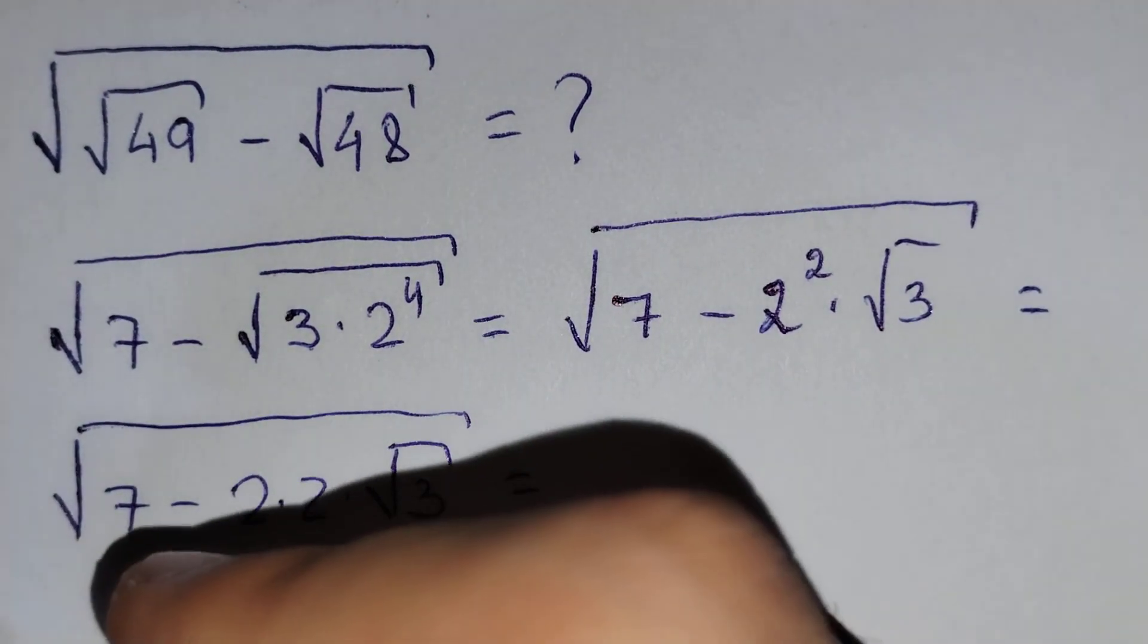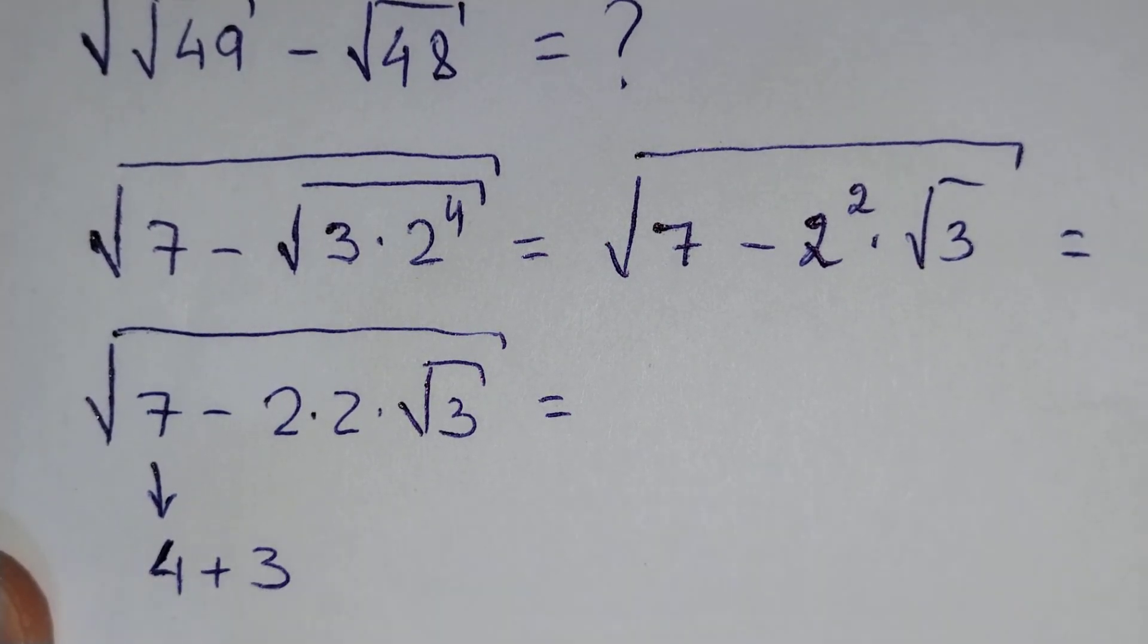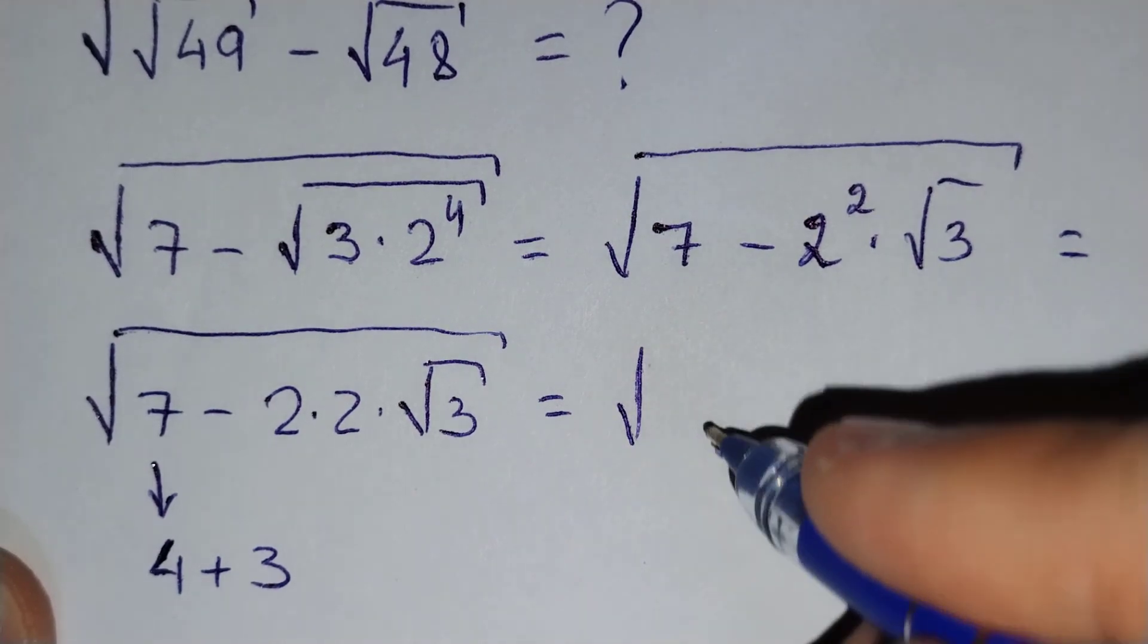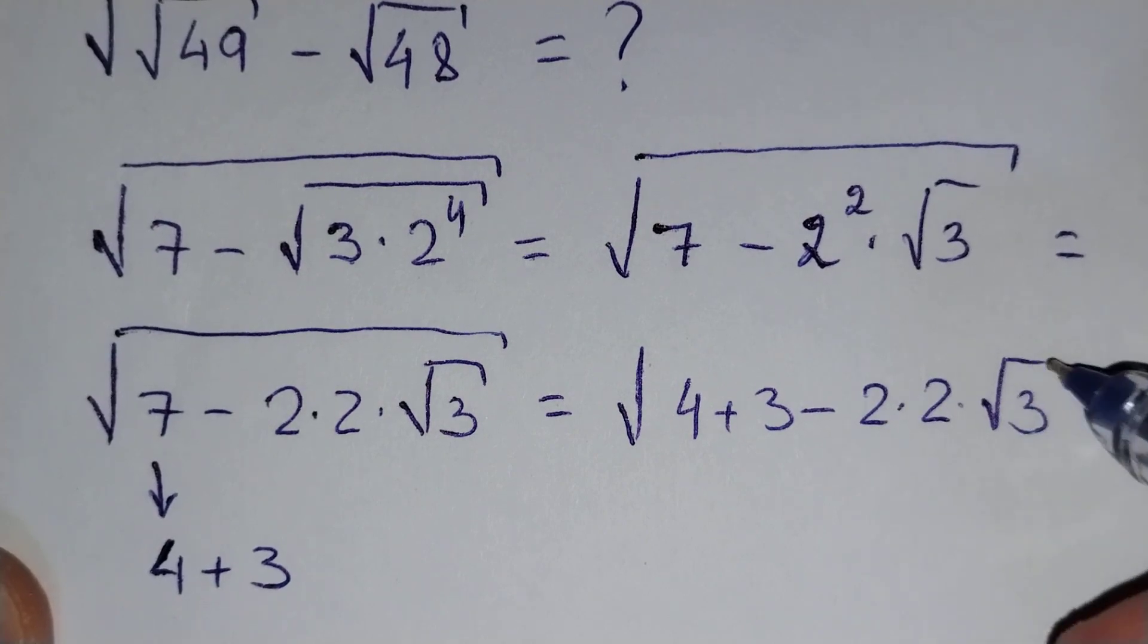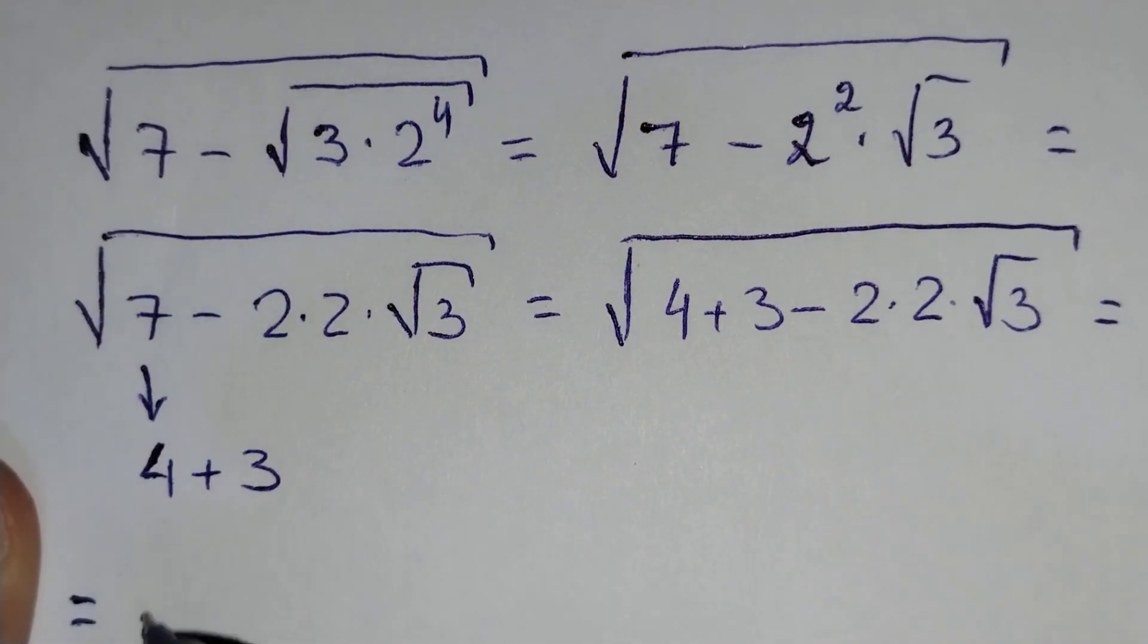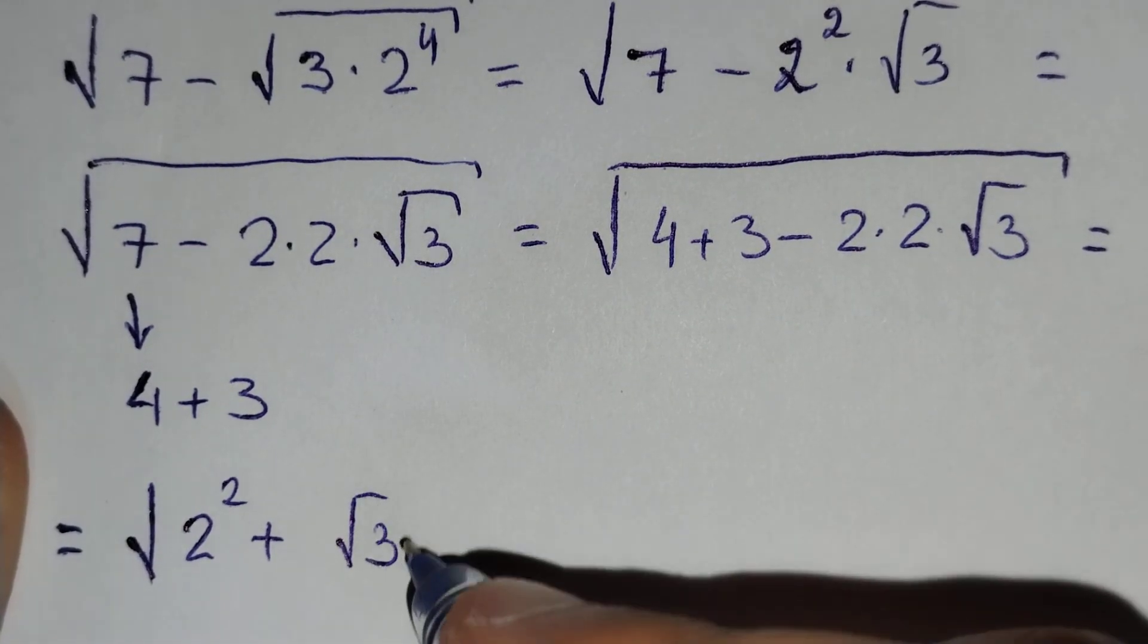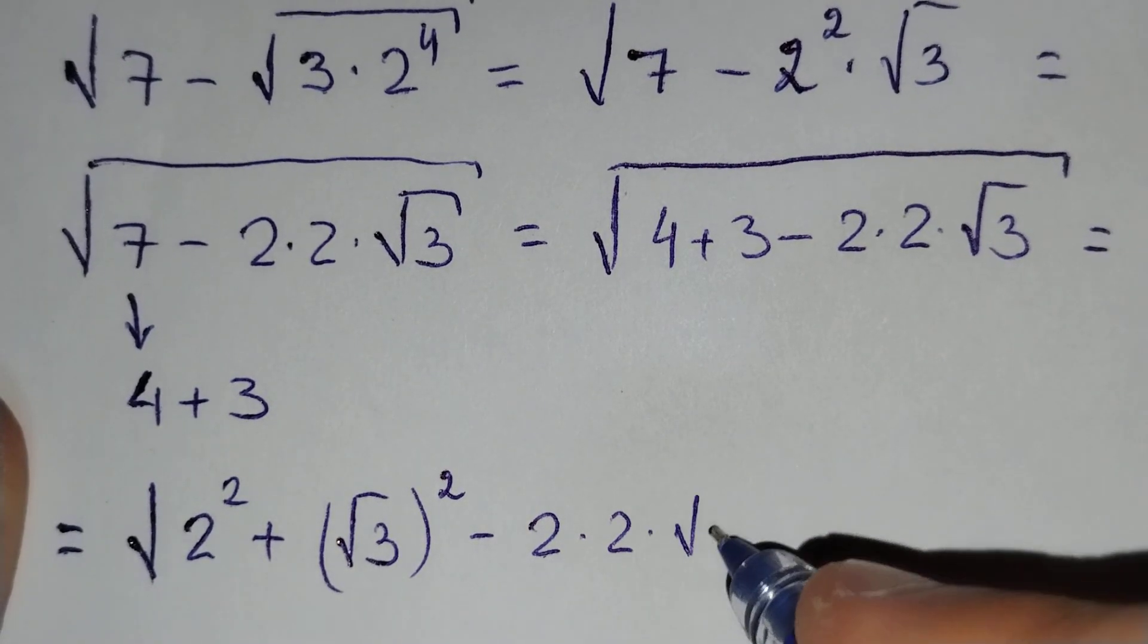7 is equal to 4 plus 3. And here square root of 4 plus 3 minus 2 times 2 times square root of 3 equals 4 equals to 2 power 2 plus 3 equals to square root of 3 power 2 and minus 2 times 2 times square root of 3.